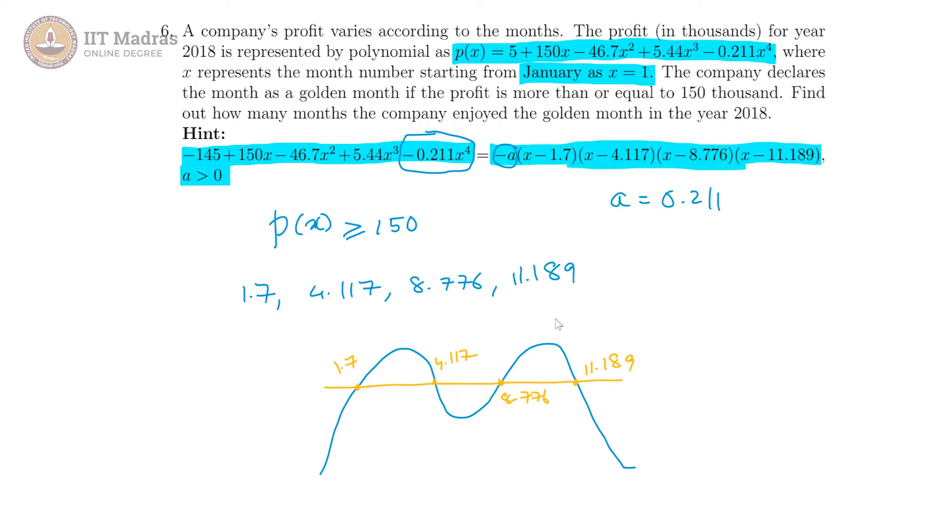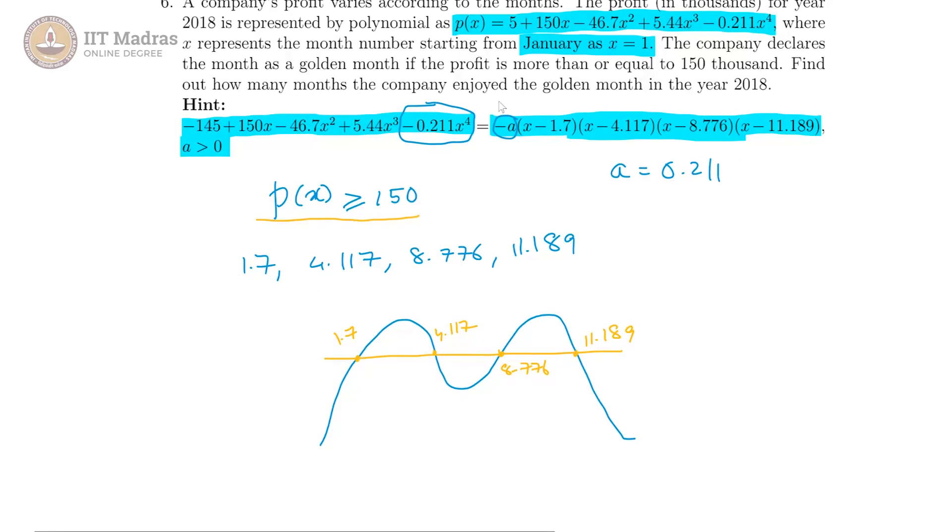So all of this is given to us, but what we are supposed to find is related to p of x is greater than or equal to 150.